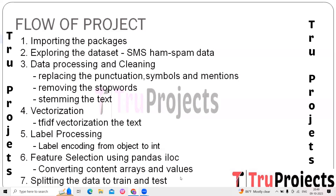Splitting the data into train and test sets is essential to assess model performance. The training set is used to train the model while the testing set evaluates its performance on unseen data. This ensures the model generalizes well to new text messages, commonly using functions like train_test_split from scikit-learn to achieve a random and representative split.